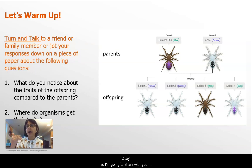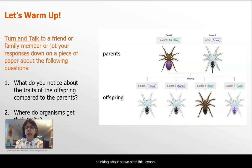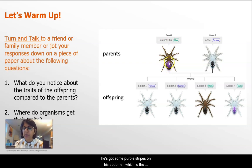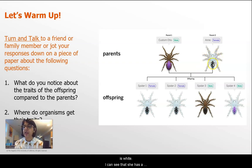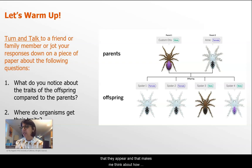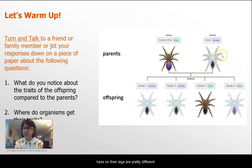I'm going to share some of the things I notice about this diagram in reference to these two questions as we start this lesson. Parent one, his name is Otis, and he has a brown body. He's got some purple stripes on his abdomen, which is the back part of his body, and he's got hairs coming off of his legs. Comparatively, Anne has a lot more hairs on her legs, and Anne's body is white. I can see she has a black set of stripes on her abdomen. So these two parent spiders, Otis and Anne, are very different in the way they appear, and their traits for body color, stripe color, and hairs on their legs are pretty different.